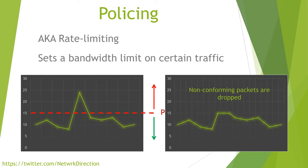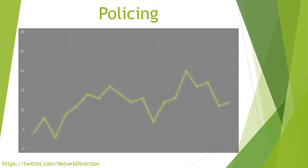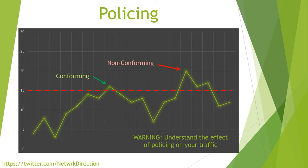A policer can recognize a small and short burst in traffic that goes over the limit. In that case, the policer will not consider these bursts to be non-conforming and will not take any additional action. However, a large increase of traffic or traffic that is over the limit for an extended duration is not considered a burst and is still non-conforming. The policer can be a bit friendly and won't penalize your traffic for small infractions. Some traffic types do not respond well to drops, and reclassifying can also be tricky as packets may be sent out of order, which can be very bad for certain traffic types. You should understand the effect of policing on your traffic before you apply it.